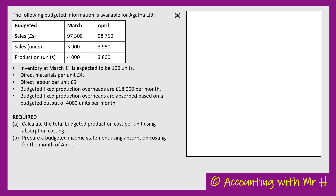The first thing I'm being asked to do is calculate the total budgeted production cost per unit using absorption costing — essentially the total cost of making one unit. So I'm going to start by looking for any direct costs: costs that can closely be attributed to the manufacture of the product. These would normally be direct materials, direct labour, and sometimes things like manufacturing royalties.